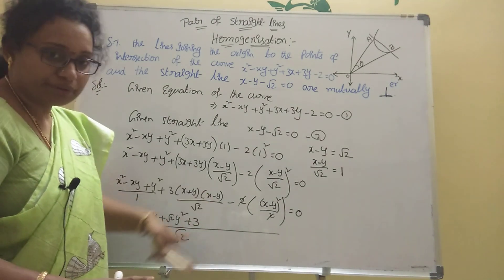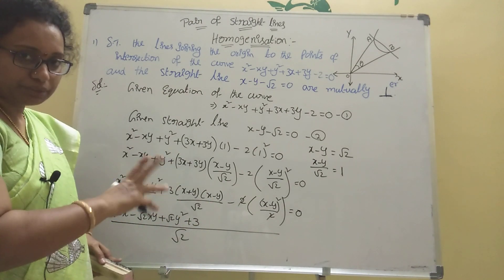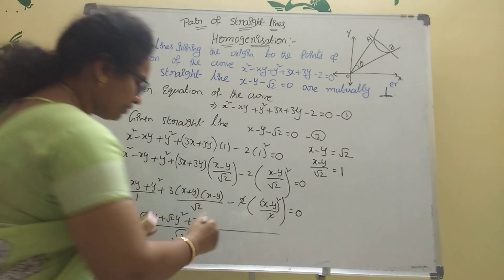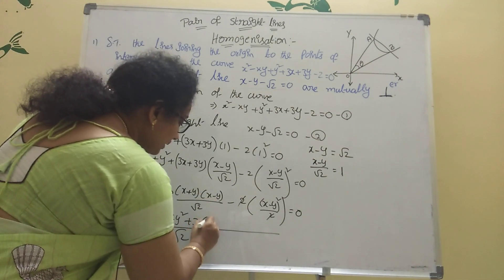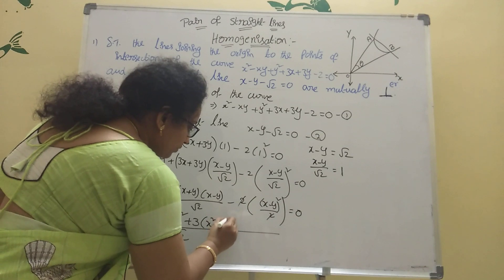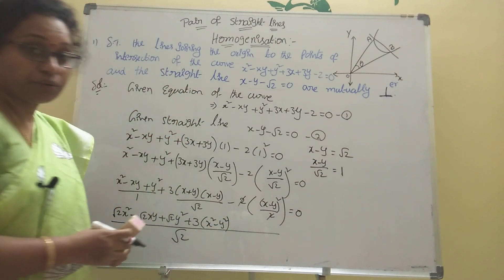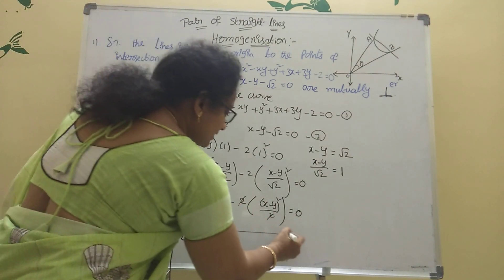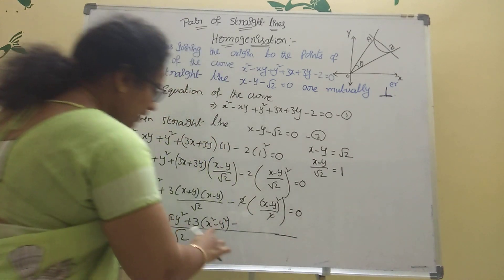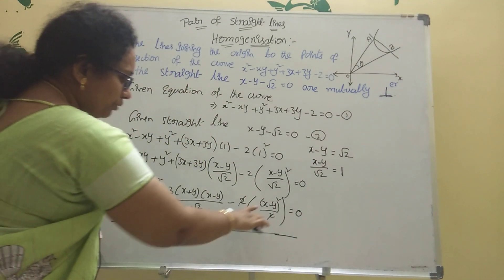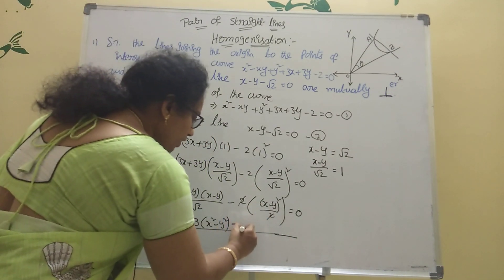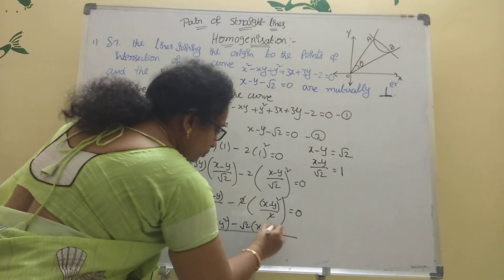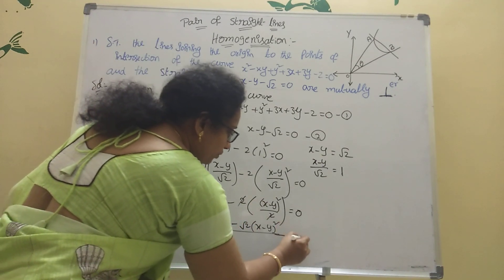Here a plus b into a minus b formula is there, so multiply them. A plus b into a minus b gives a squared minus b squared. Then 3 of x squared minus y squared — 3 is there. Next, minus root 2 into x minus y whole squared equal to 0.